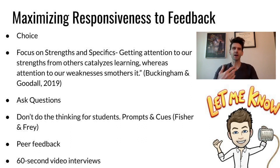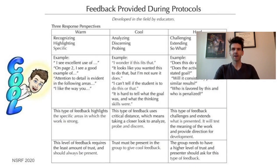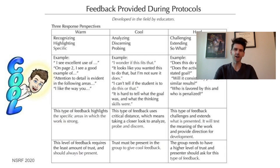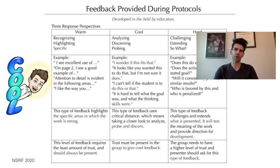The next resource I want to share is the feedback resource from the National School Reform Foundation, which gives you three levels of feedback: warm, cool, and hard feedback. I like this because it is a scaffolded approach, especially if you are meeting your students for the very first time. For those very first few assignments, you might want to start with the warm feedback column. Then as you get to know students and they dive into more complex work, you're able to give cool and hard feedback and really ask those probing and deep questions.